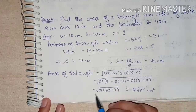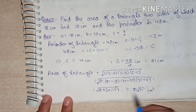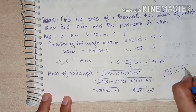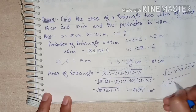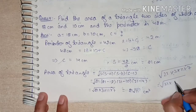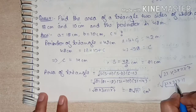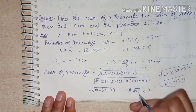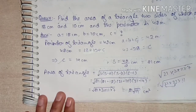Now we solve this. As I showed in the previous video how to solve roots, this is quite simple. We have √(21 × 3 × 11 × 7). Notice that 3 × 7 = 21, so we get √(21 × 21 × 11). When a pair forms under the root, it comes out, so 21 comes out and √11 remains inside. Therefore, Area = 21√11 cm². Clear. Let's move to question number 5.